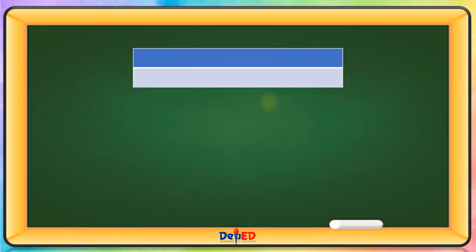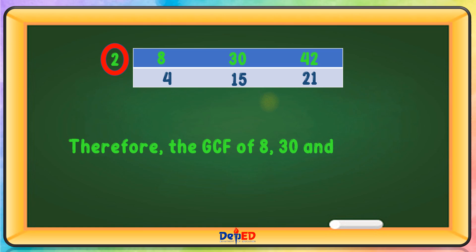Next: 8, 30, 42. Using prime number 2: 8 divided by 2 equals 4, 30 divided by 2 equals 15, and 42 divided by 2 equals 21. We only have 1 prime number, which is 2. Therefore, the GCF of 8, 30, and 42 is 2.